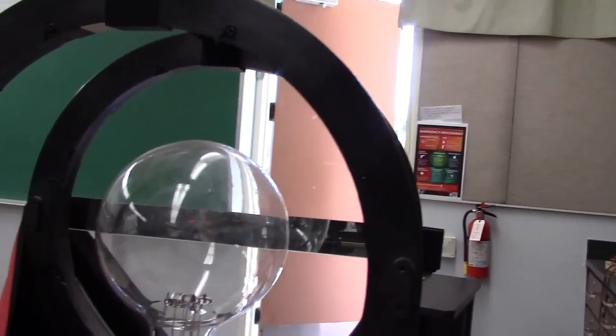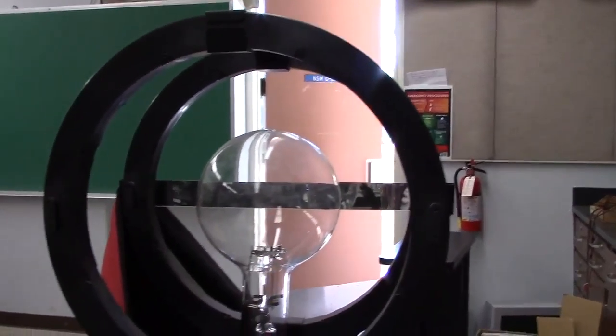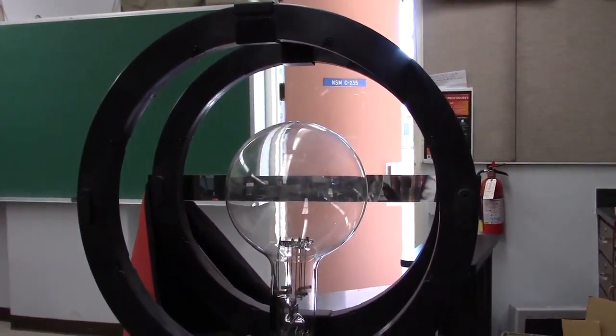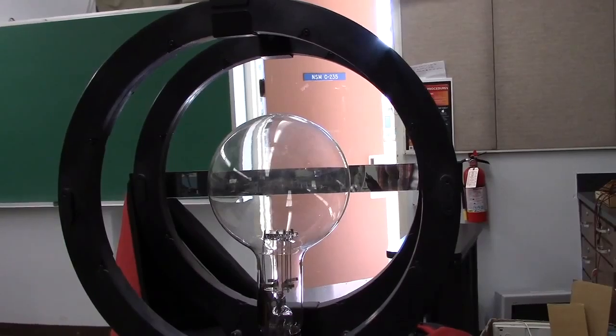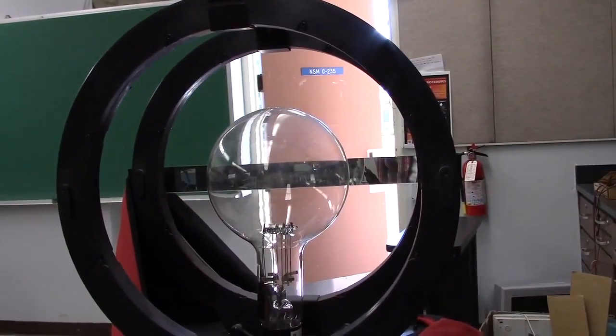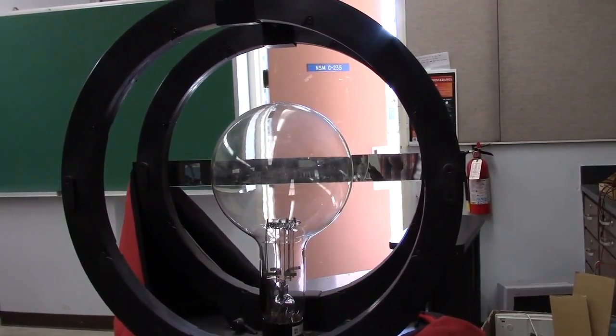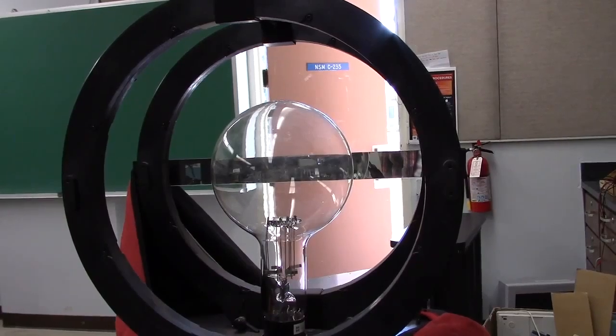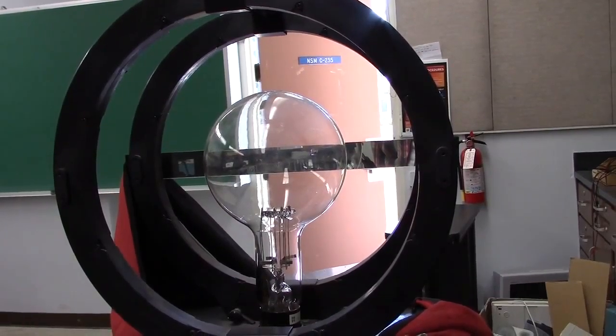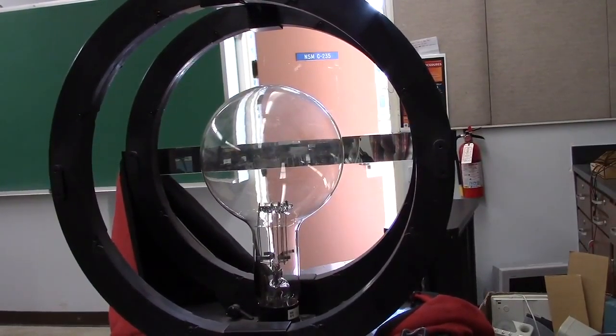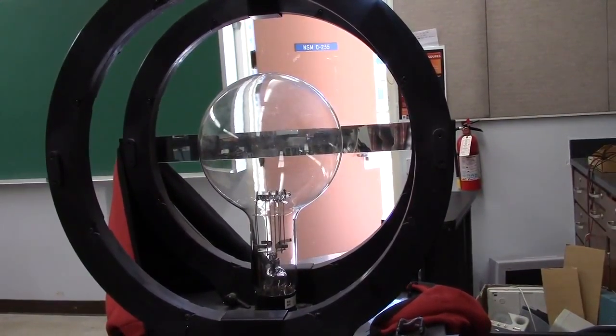One of the measurements you're going to make if you do this as a lab or treat it quantitatively as a demonstration is the radius of the circle. That gives you q over m, charge over mass, if you know the velocity of the electrons. A priori, you do not. Knowing the voltage through which they're accelerated tells you their energy per unit charge, but if you don't know their mass, then you don't know what velocity that corresponds to.